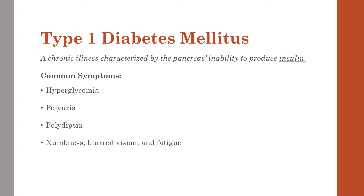I don't want to spend too much time on this, but type 1 diabetes mellitus is characterized as an inability of the pancreas to produce insulin. Some common symptoms of this pathology are high blood sugar, frequent urination, frequent thirst, as well as some sensory deprivation, numbness, blurred vision, and fatigue.